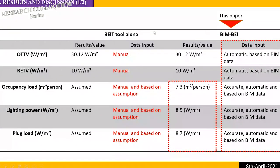When we tested our tool on the case study and compared results against using BIT alone, the results are exactly the same — which is expected because this is a static model following the same equations with the same variables. However, the most important difference is that our process is automatic and based on BIM data, whereas the BIT tool requires manual input. The same applies to RTTV — same results, but our method is automatic and takes only seconds, while the BIT tool is manual and takes more time.